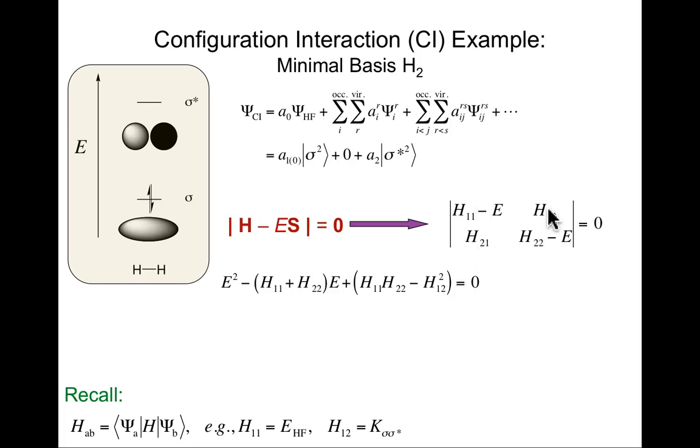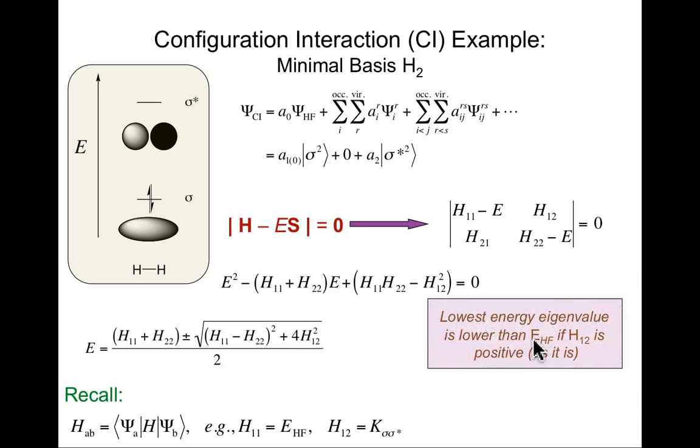If you solve this quadratic equation in E, the solution involves the lowest energy root being pushed down below the Hartree-Fock energy, and the other root being pushed up beyond what H₂₂ is. The point I want to make is before we were interested in that lowest energy root. Now we're actually going to be interested in the excited electronic states. What about the energies of those other roots? Those are the energies of excited states.